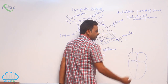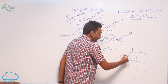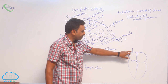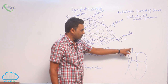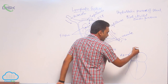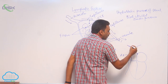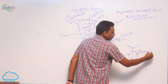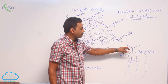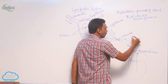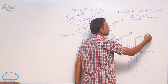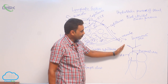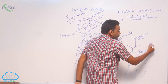The right atrium receives deoxygenated blood from one precaval vein and one postcaval vein. The precaval vein is formed by two branches called innominate veins — the left innominate vein and the right innominate vein. Each innominate vein starts as a subclavian vein and is joined by an external jugular vein and an internal jugular vein.